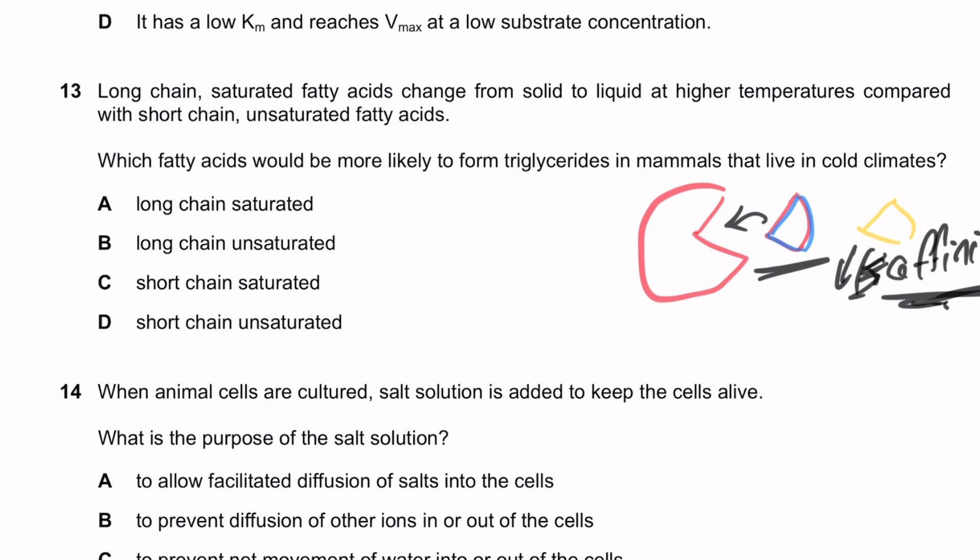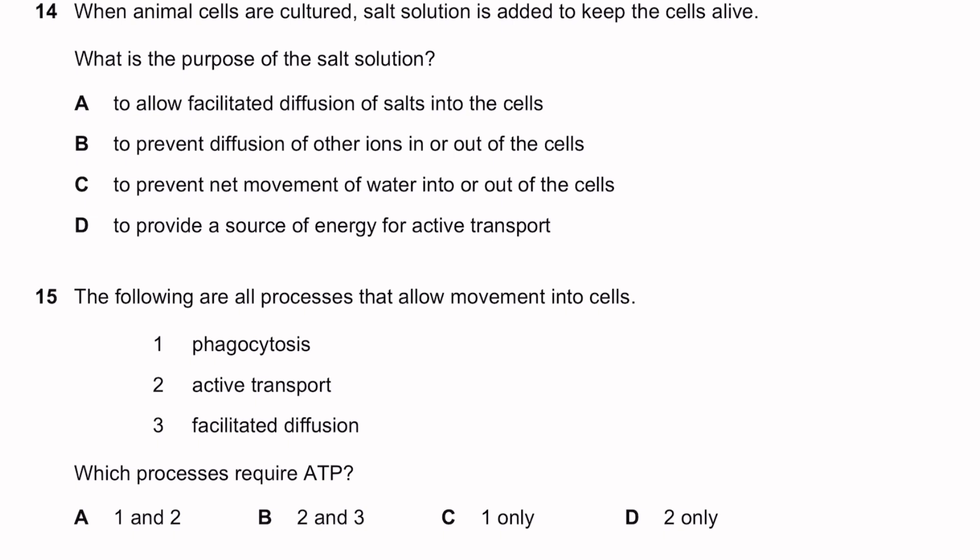Question thirteen. Long-chain saturated fatty acids change from solid to liquid at a high temperature compared with short-chain unsaturated fatty acids. Which fatty acids would more likely form triglycerides in mammals living in cold climates? In cold climates, organisms need more unsaturated and short-chain fatty acids to maintain membrane fluidity, because cold temperatures reduce molecular movement. More unsaturated fatty acids decrease membrane rigidity and maintain fluidity. So the answer is short-chain unsaturated fatty acids.